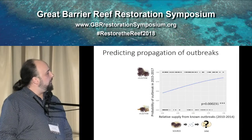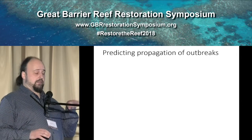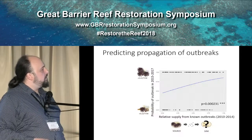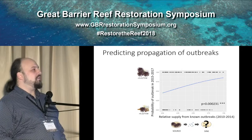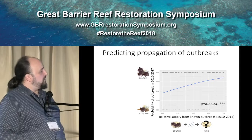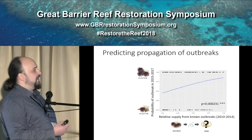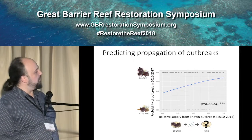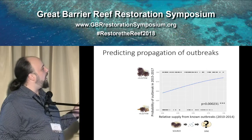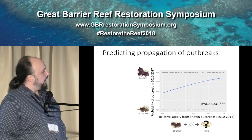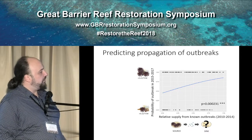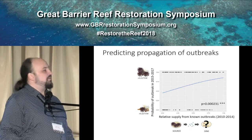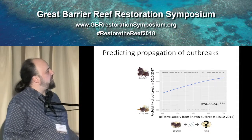For propagation — if COTS are on a reef and there's a known outbreak, and we know there's a connection to a downstream reef, can we predict that the downstream reef is actually going to have an outbreak later? The answer is yes, but only to an extent. The model works mathematically, and you get a nice relationship, but how useful it is in a blind predictive sense is a different question. On the x-axis we have relative supply from outbreaks, and on the y-axis the probability of observing an outbreak in a later period. There are lots of reefs that had high exposure but didn't get COTS, and some reefs that had low exposure according to model predictions but did have COTS. The prediction is good but not perfect, and there are lots of reasons for this.